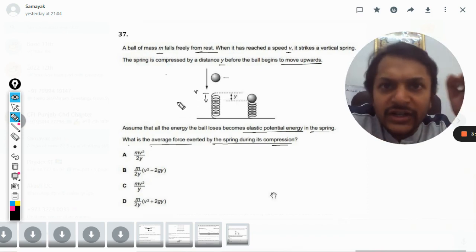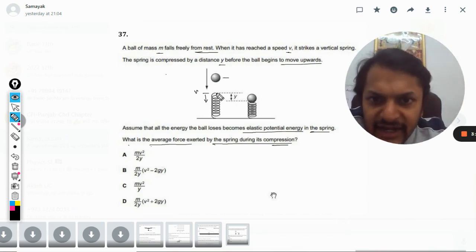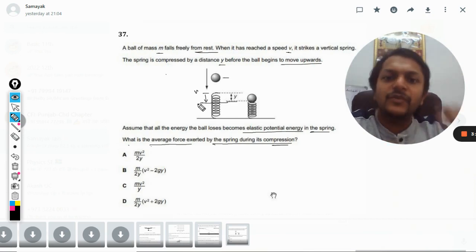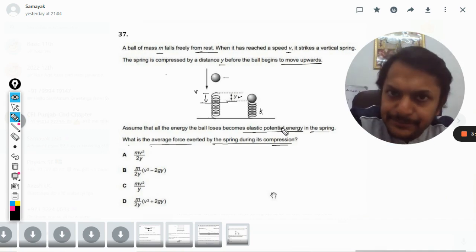So all the potential energy is converted into kinetic energy. Now this kinetic energy is used to compress the spring from one point to another. The spring is compressed and the compression is y, and the spring constant is k.